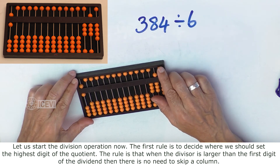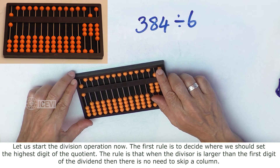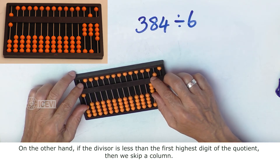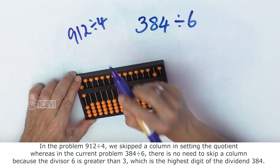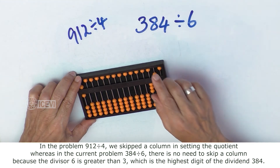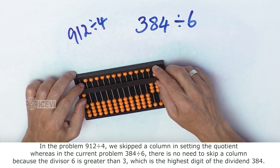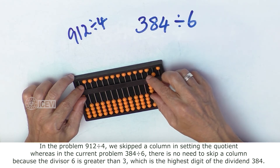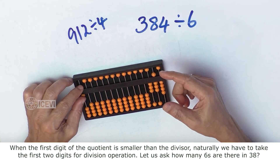Let us start the division operation now. The first rule is to decide where we should set the highest digit of the quotient. When the divisor is larger than the first digit of the dividend, there is no need to skip a column. On the other hand, if the divisor is less than the first highest digit of the dividend, then we skip a column. In the problem 912 divided by 4, we skipped a column. Whereas in the current problem, 384 divided by 6, there is no need to skip a column because the divisor 6 is greater than 3, which is the highest digit of the dividend 384. When the first digit of the dividend is smaller than the divisor, naturally we have to take the first two digits for the division operation.